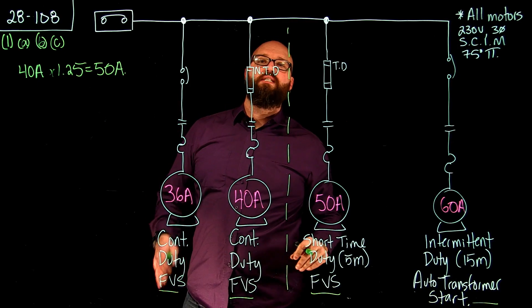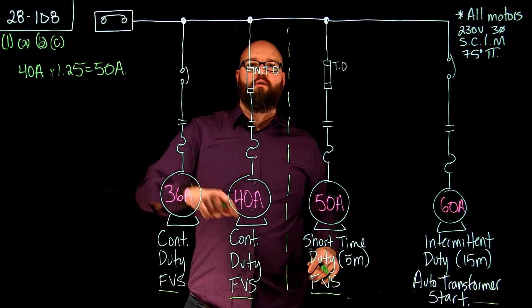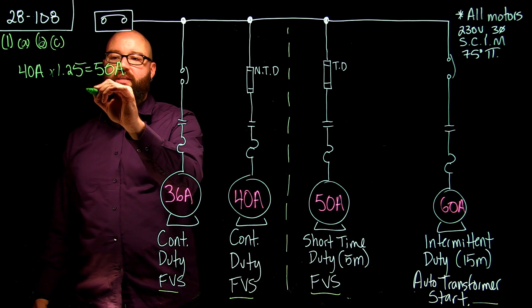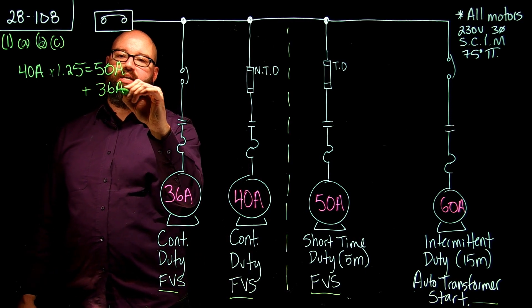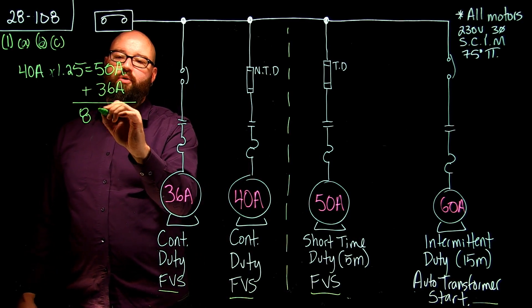Then I'm going to take the rest of the continuous duty FLAs, which in this case is our leftover 36 amps, and I'm going to add them right to it, plus 36 amps, gives us a total of 86 amps.